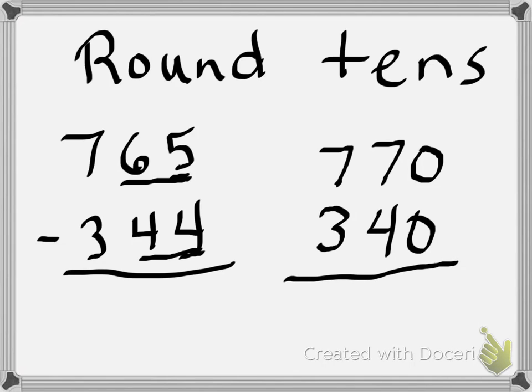Stick that 300 back on. Now remember, we're estimating differences. So we're going to use the operation of subtraction. 0 minus 0 is 0, 7 minus 4 is 3, and 7 minus 3 is 4. That's how I come up with the estimate of 430 when I subtract 765 minus 344.